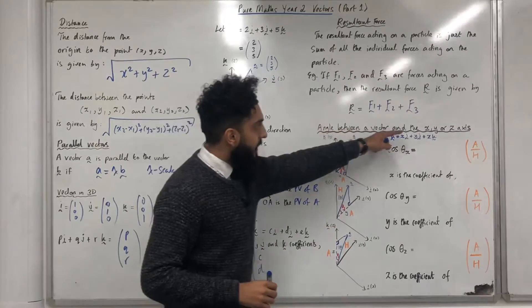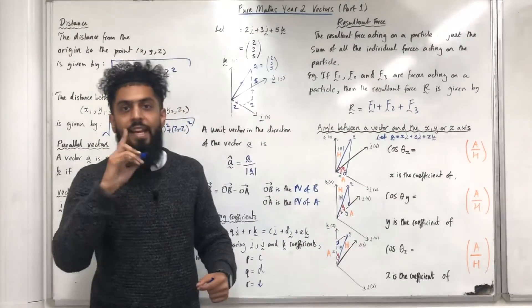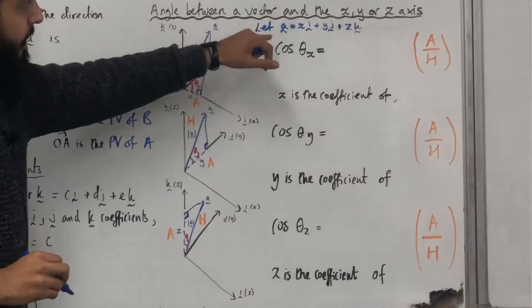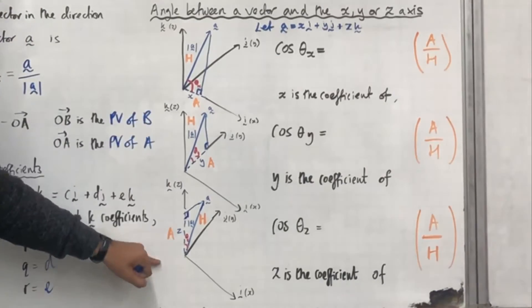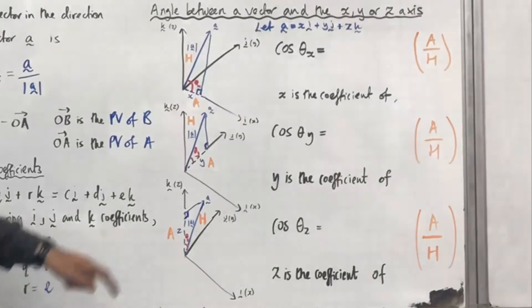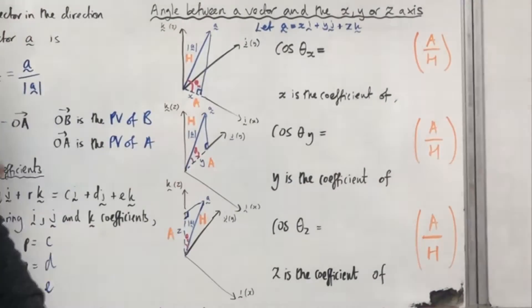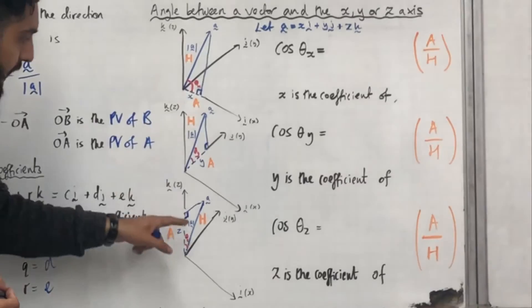Angle between a vector and the x, y or z axes. Let a be the vector xi plus yj plus zk. I've got three coordinate grids. For each of these coordinate grids, I've labelled the vector a and I've also labelled the magnitude of the vector a.